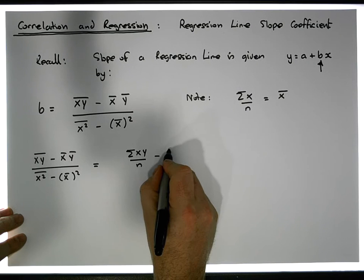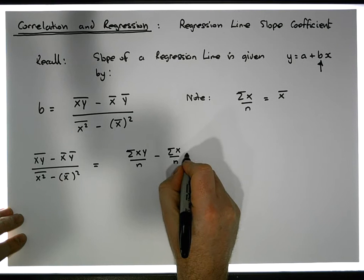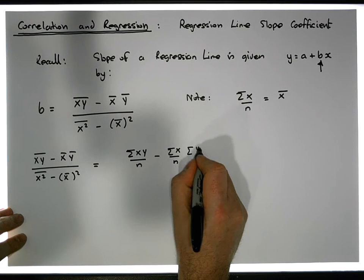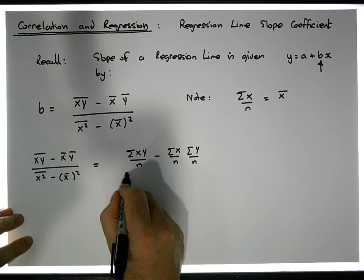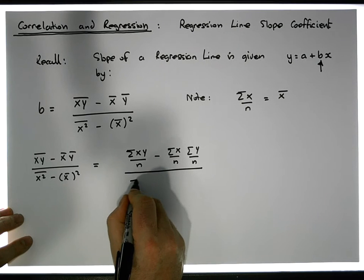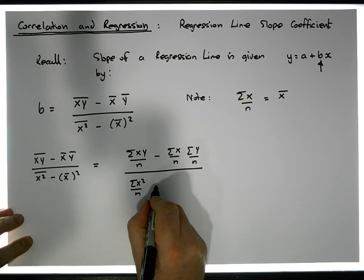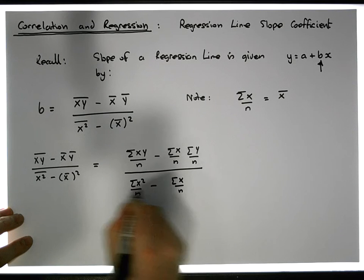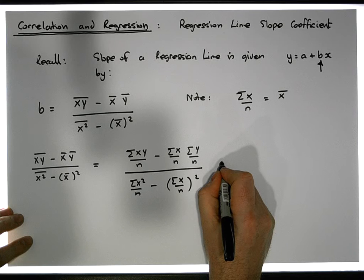...the average of the x's is the sum of the x's over n, and the average of the y's is the sum of the y's over n. That's our numerator, which needs to be divided by the denominator. The average of the x-squared is the sum of the x-squared observations over n, minus the average of the x's — which is the sum of the x observations over n — all squared.